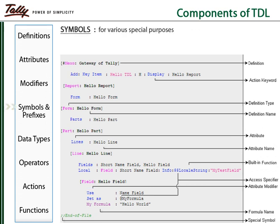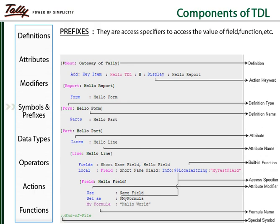There are various symbols in TDL used for specific purposes — for example, the hash symbol while reusing an existing definition, and the double semicolon used before a comment. A number of prefixes in TDL act as access specifiers; for example, the $ prefix to access a function and the @ prefix to access a local formula value.